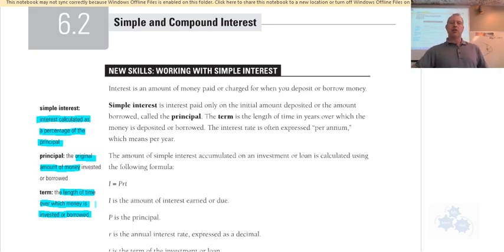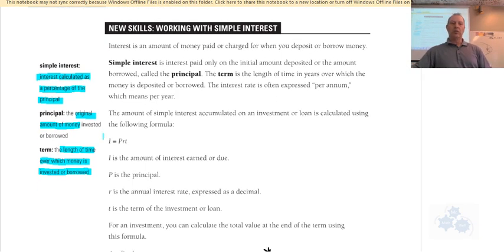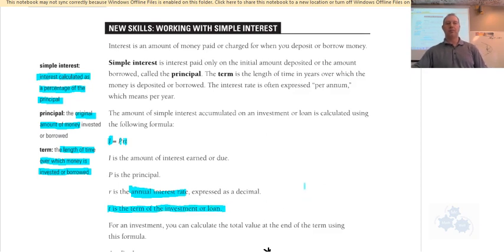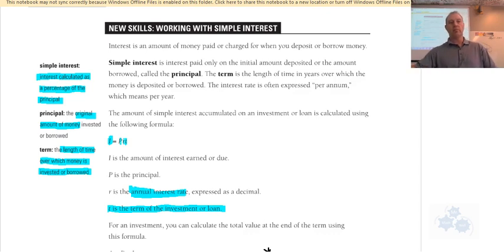Simple interest is simply a percentage of the principal. The formula is: I (the amount of interest owed) equals the principal P, multiplied by R (the annual interest rate), multiplied by T (the term of the investment, usually in years). Since R is annual — per year — T is also in years. The percentage must be expressed as a decimal, so we'll convert it in our examples.